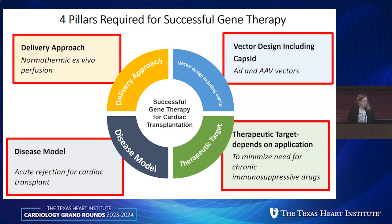The example I'm giving today is around cardiac transplantation, because that's near and dear to my heart. The four pillars are: the delivery approach — I'm going to focus on normothermic ex vivo perfusion — and the vector design, including the capsids. This research involves my experiences with adenoviral vectors as well as adeno-associated viral vectors. The delivery approach and vector design go hand in hand.